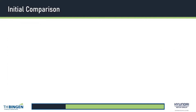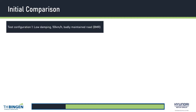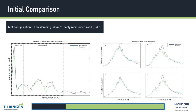Moving on to the initial comparison. After parameterizing the vehicle model and road model only according to the collected data, the simulation was carried out for two test configurations: low damping with cruising speed of 50 km/h on badly maintained road, and on smooth road. The diagrams show the frequency response of vertical acceleration of the driver's seat and of all four wheels from the simulation and measurement. Looking at the wheel response on the badly maintained road, both left wheels correlate well with the measurement in terms of frequency and amplitude.